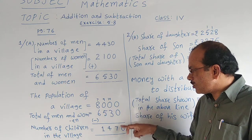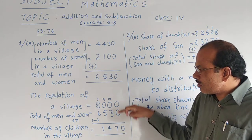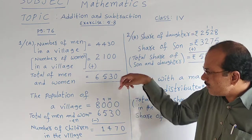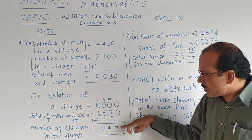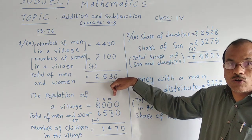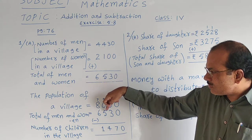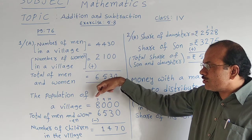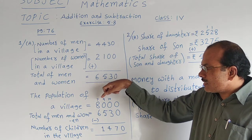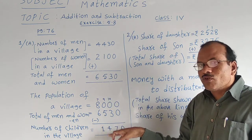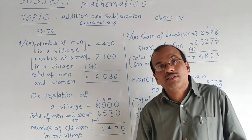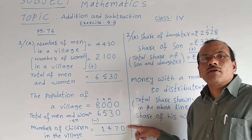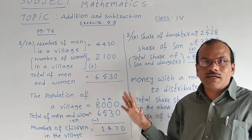Zero minus zero is zero. From zero we cannot subtract three, so we borrow. Ten minus three is seven; the next place becomes nine because borrow was given. Nine minus five is four. Eight gave borrow so it becomes seven; seven minus six is one. Finally, one thousand four hundred seventy children are there in that village.